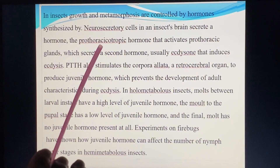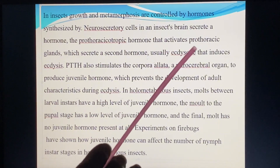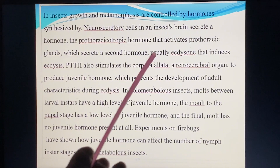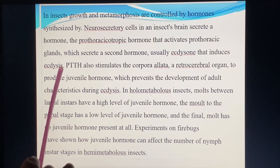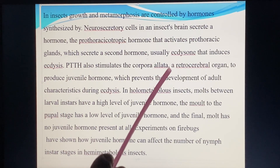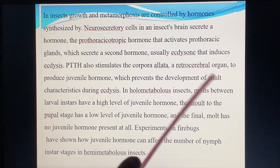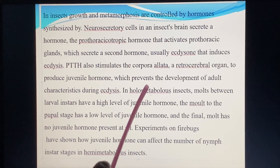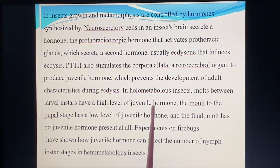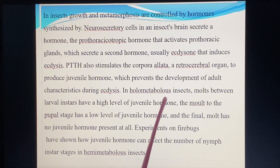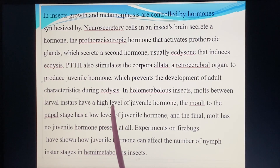There are hormones that induce molting and development. In hemimetabolous insects, and in endopterygotes, the molt between larvae and later instars has a high level of juvenile hormone.